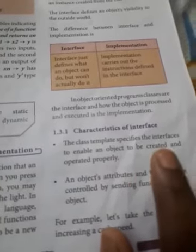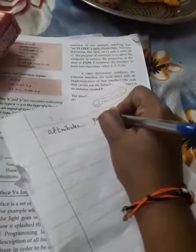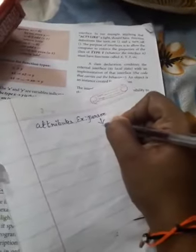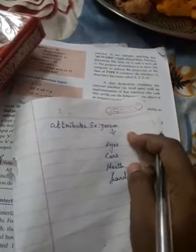Let us take one example. For attributes, you can take the example of a person. This person has attributes such as eyes, ears, mouth, and hands. These are the attributes of the person.